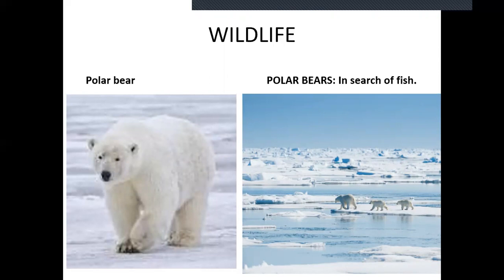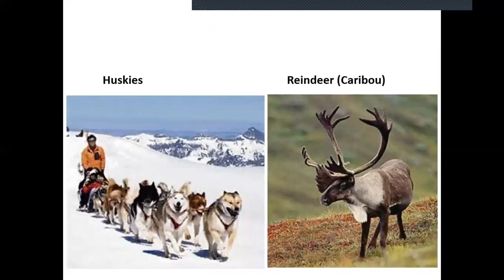In winter, a thick sheet of ice forms on the water and people can walk on the ocean. There are ice holes where big fish jump into the air to breathe. When fish jump to breathe oxygen, the polar bear catches and eats them. Huskies are a kind of dog used for pulling carts or sledges. In Greenland, reindeer is called caribou.